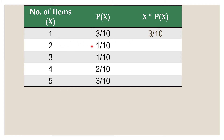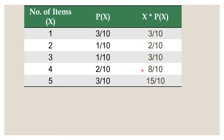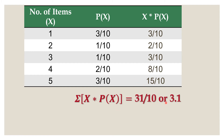Two times one over ten gives two over ten. Three times one over ten gives three over ten. Four times two over ten gives eight over ten. And five times three over ten gives fifteen over ten. Since the values here are all similar fractions, we just add their numerators. Three plus two is five, five plus three is eight, eight plus eight is sixteen, and sixteen plus fifteen is thirty-one, all over ten. The answer is thirty-one over ten, or 3.1.